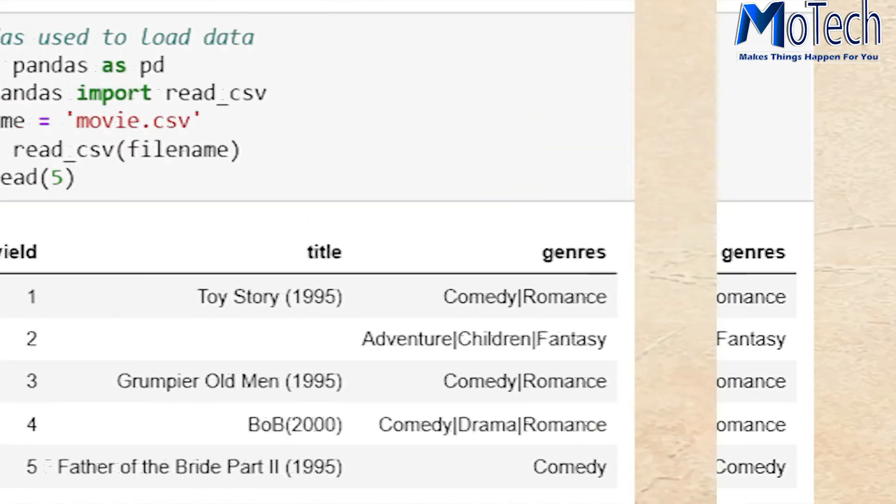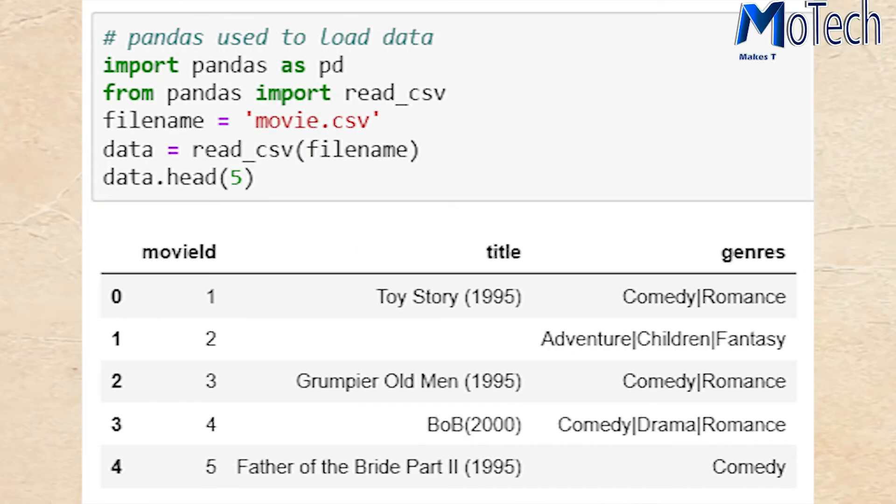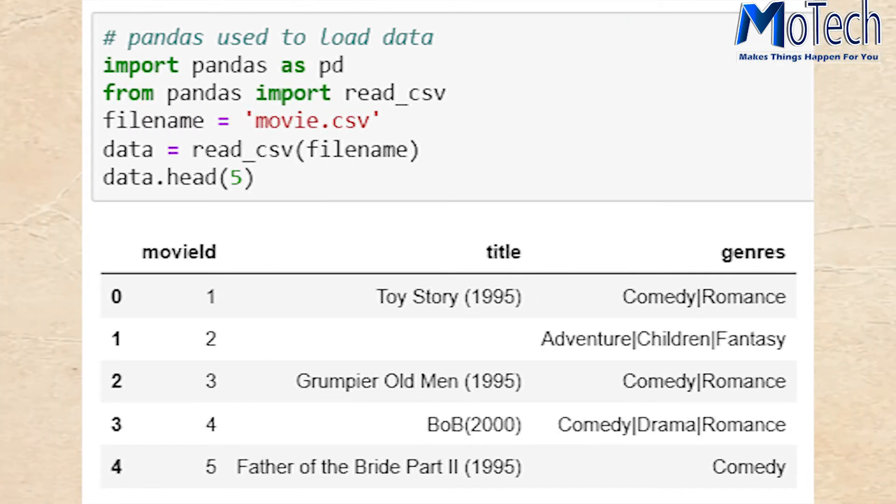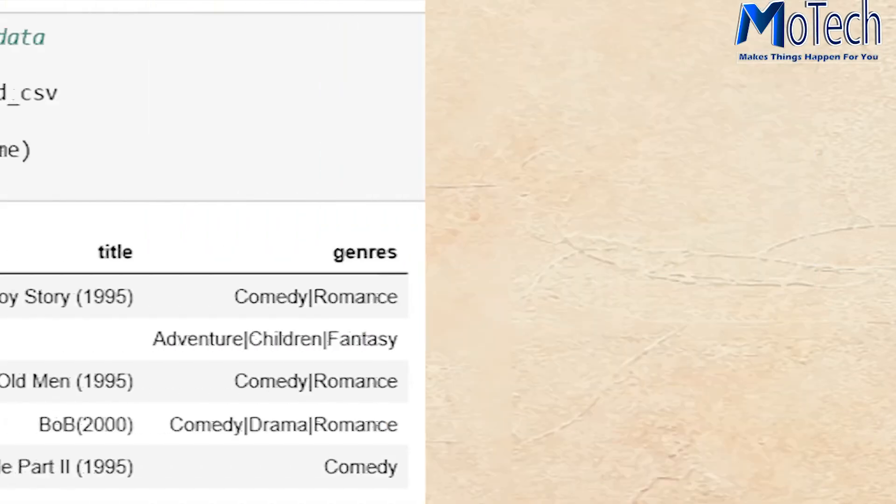Number three: Pandas. This is a very powerful library for data analysis. Pandas will help you to make analysis of data, exploration of data, and manipulation of data. Pandas is very important for data scientists because it covers the great part of your project in data science.